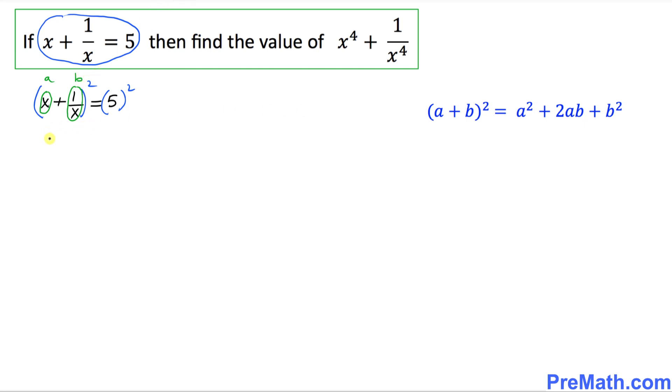Let's now expand this one. That's going to give us x squared plus 2 times x times 1 over x, plus 1 over x whole squared, equals 5 squared, which is going to be 25.